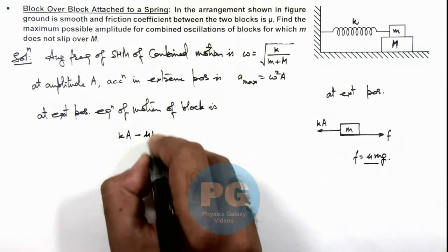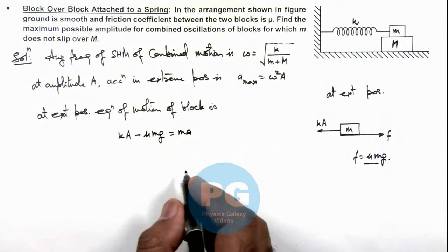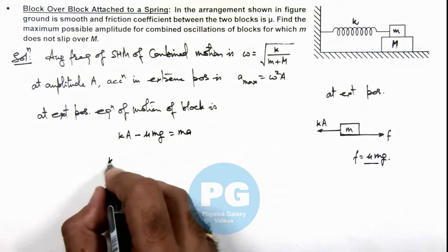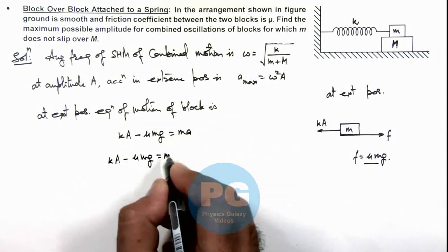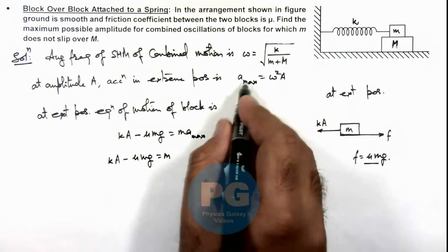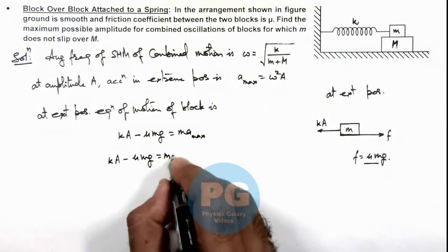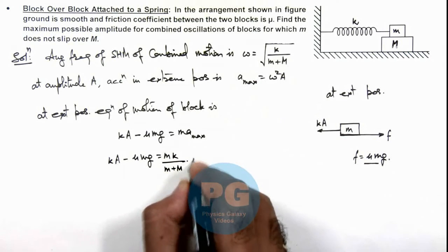Here we can write k times A minus mu m g equals m times maximum acceleration in extreme position, which is omega squared A, which is k by m plus capital M multiplied by A.